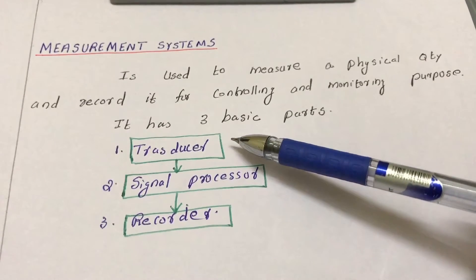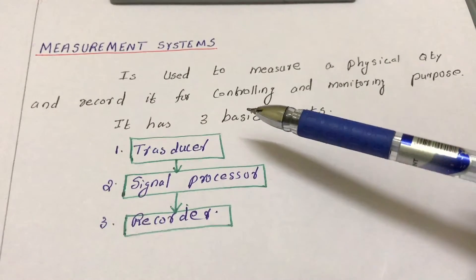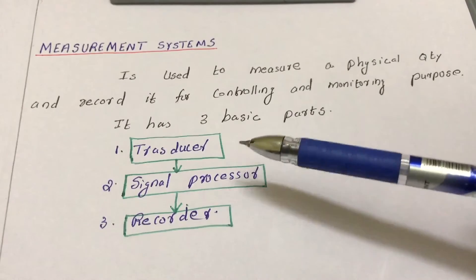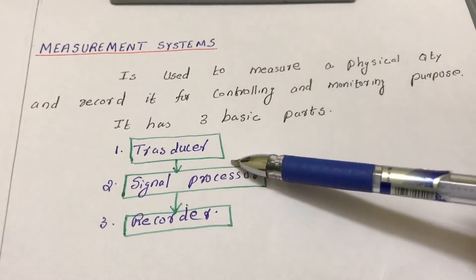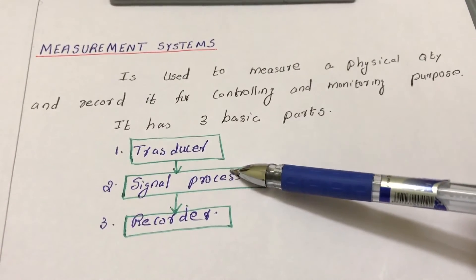Let's see what a transducer is. A transducer is a sensing device that converts a physical input to an output. Usually it measures a physical input like vibration and converts it to another output. Typically, voltage is the transducer output, and then that output is sent to the signal processor.